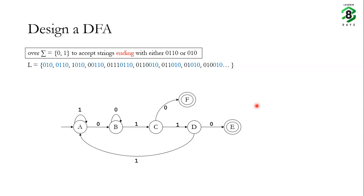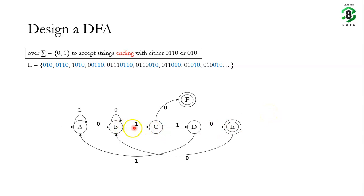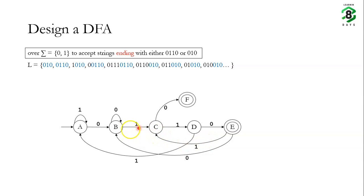Now let's think about state e. Being in state e means we have already received 0110. If we receive a 0 after that, we can then receive 1 and 0 to reach the final state again, so on state e for input 0 we go to state b. If we receive a 1 in state e, we can still get a 0 and go to the final state, so on state e for input 1 we go to state c — meaning we've received 01101 and at state c receiving 0 takes us to final state f.